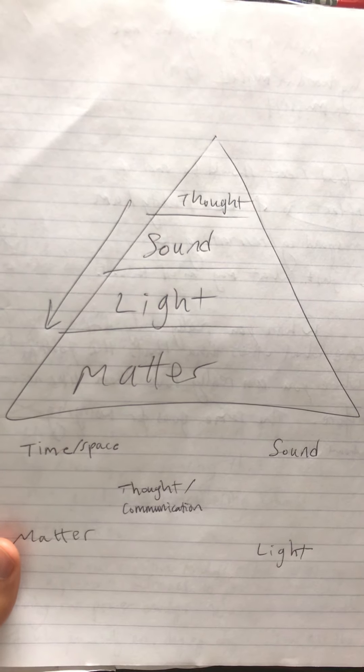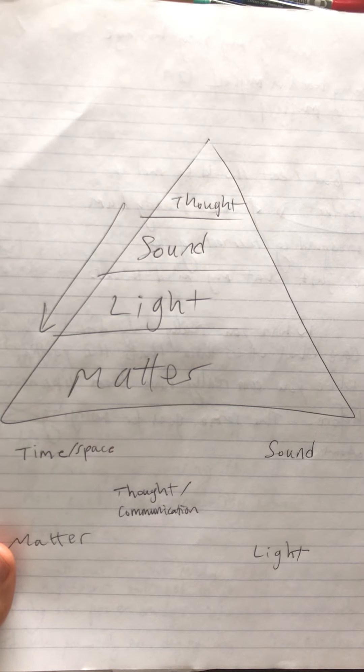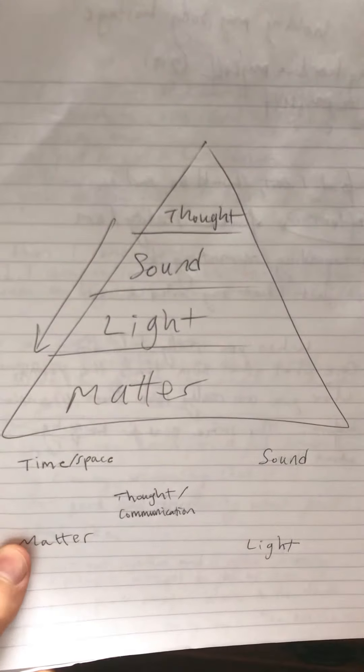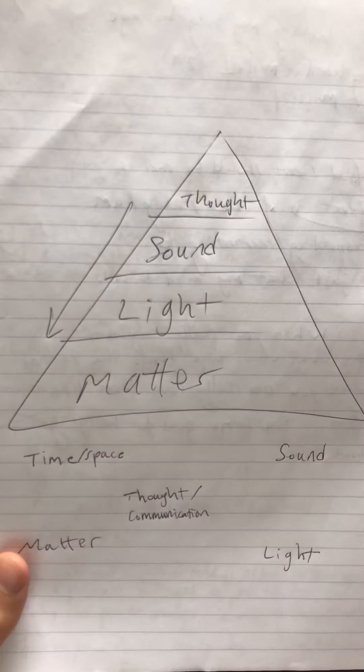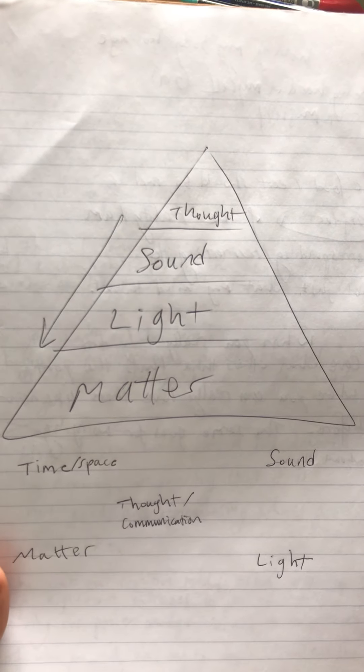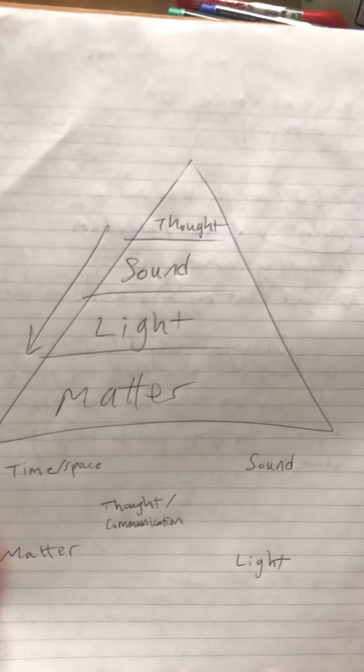and that metaphysical light became spiraling vortexes which created the illusion of matter which is a spin-off from the light.